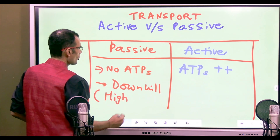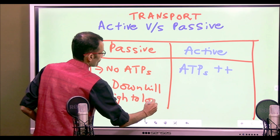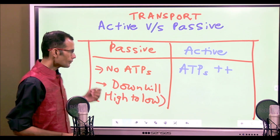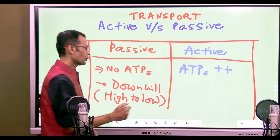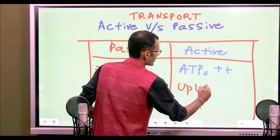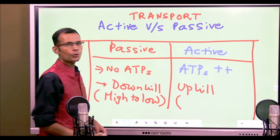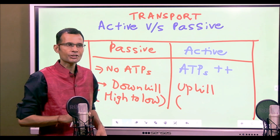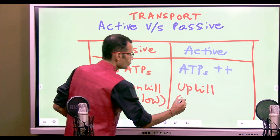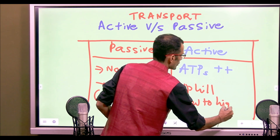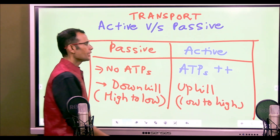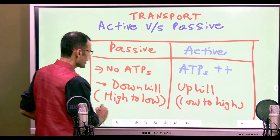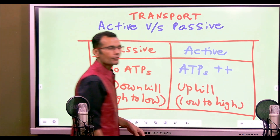On the contrary, active transports — where ATP is being consumed — are called uphill transports. The transported substance is going from its low to its high concentration, uphill. So low to high concentration is what characterizes active transport. These are the two basic differentiating features between passive and active transports.